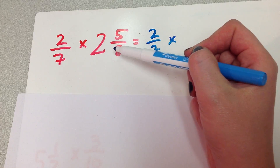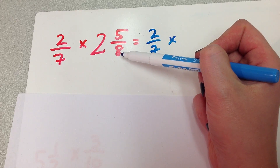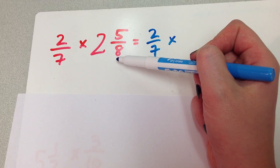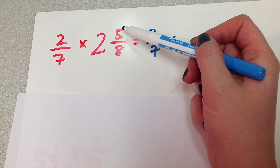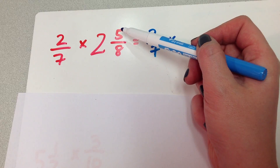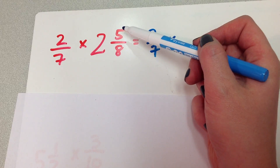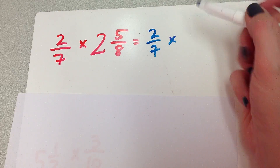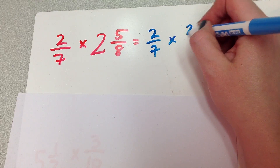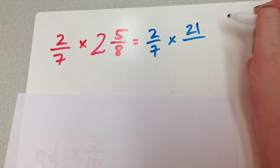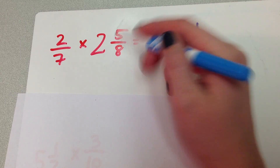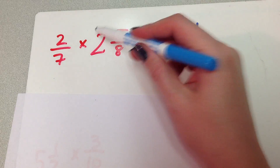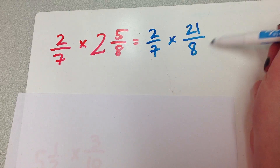So I'm going to multiply 2 times 8, which is 16, and then I'm going to add 5 — 16, 17, 18, 19, 20, 21. My bottom number is going to stay the same. So this right here equals this.